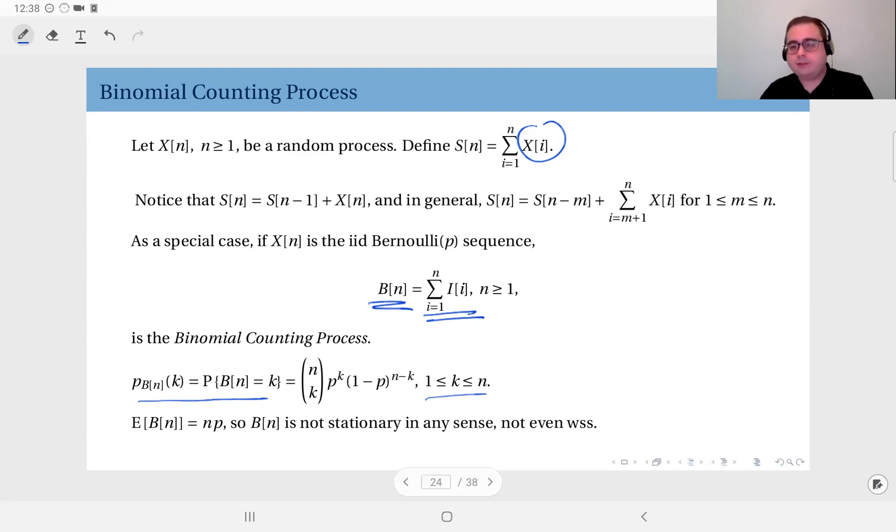So it's not the binomial random variable because the N is not fixed. N now is the time index. So it's a rolling count. After every trial, you update your count. Now, obviously, the expected value of the binomial counting process, because it has a binomial distribution, has a mean value of N times P. And obviously, as you see, it depends on time. N is time. It depends on time.